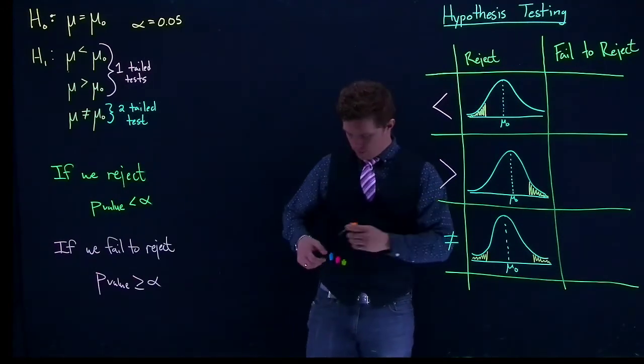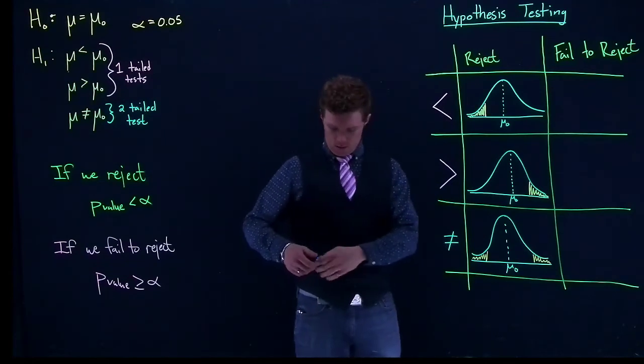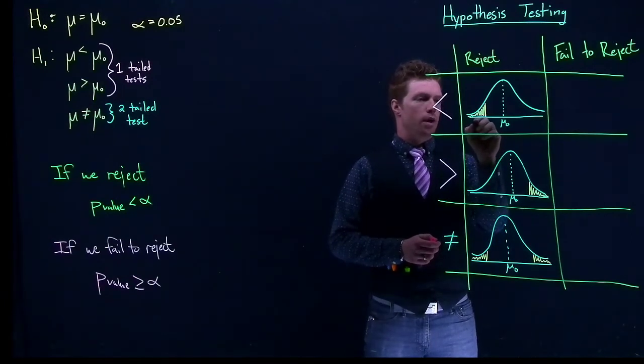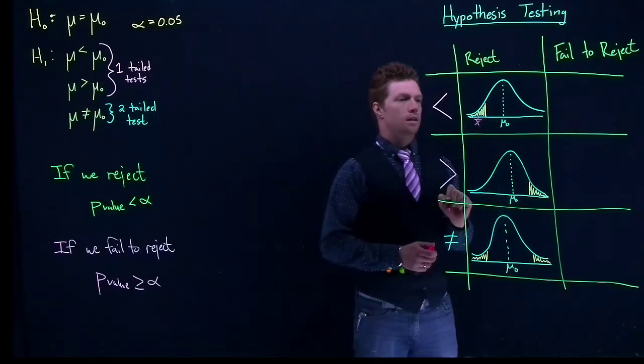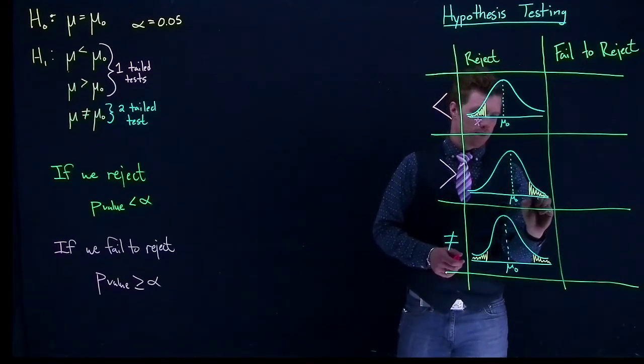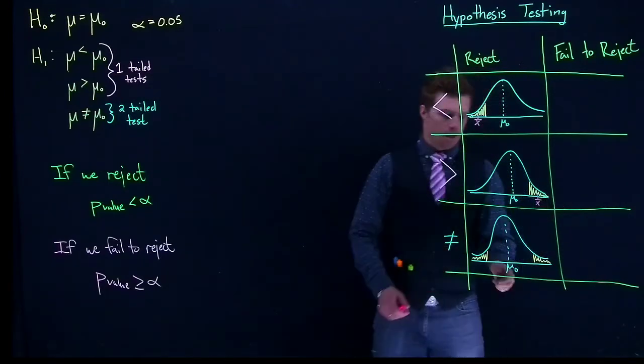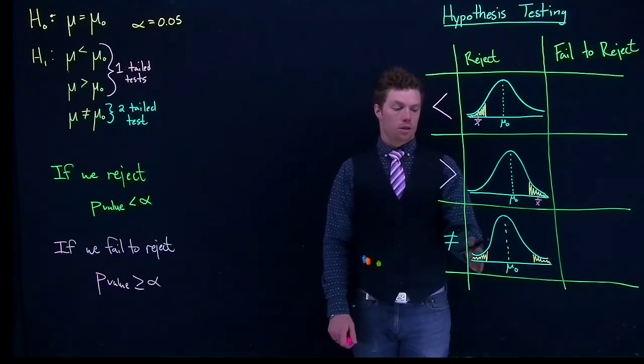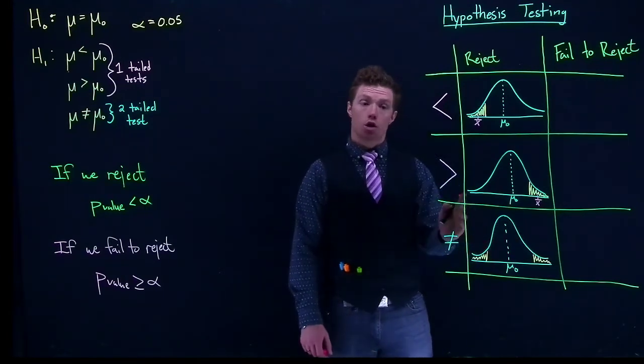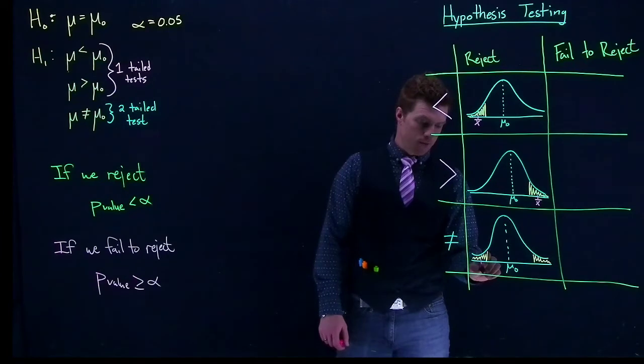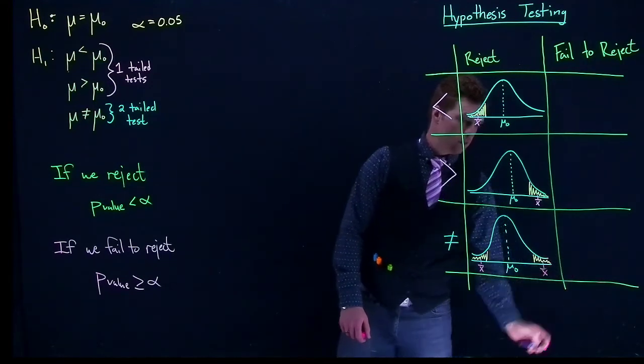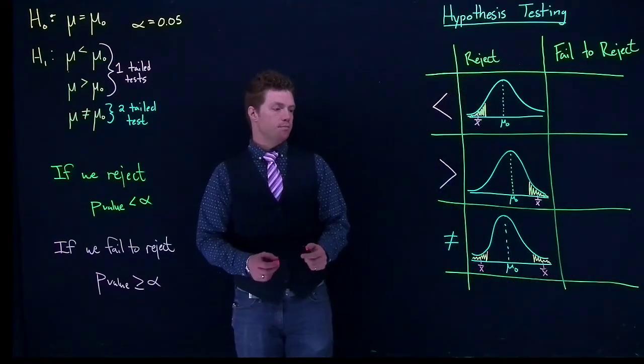So we would reject the null hypothesis if, from our sample, that our x-bar would land somewhere in the rejection region, or where that alpha is shaded under the curve. Over here, somewhere in here for x-bar. And down here with two-tail, we didn't know if the true mean was actually bigger or smaller than what was reported. We just thought that it was different. So x-bar could have been, and we could reject it, if we get an x-bar that's really low. Or we could reject if we have an x-bar that is really high.